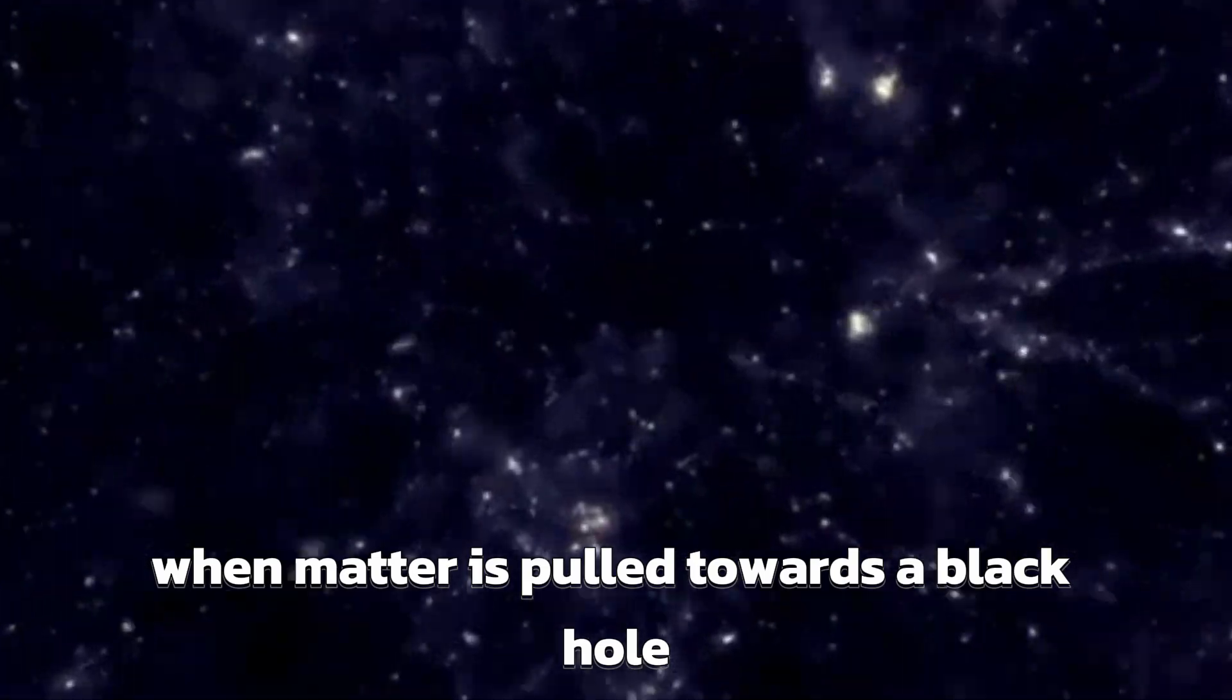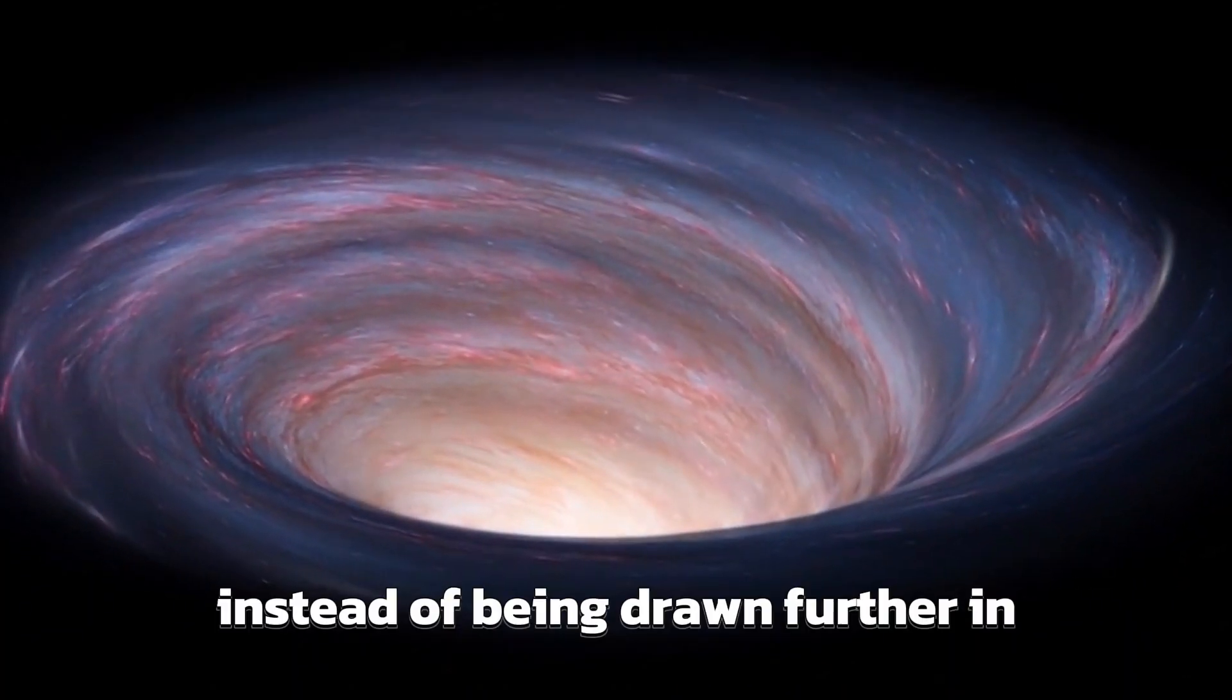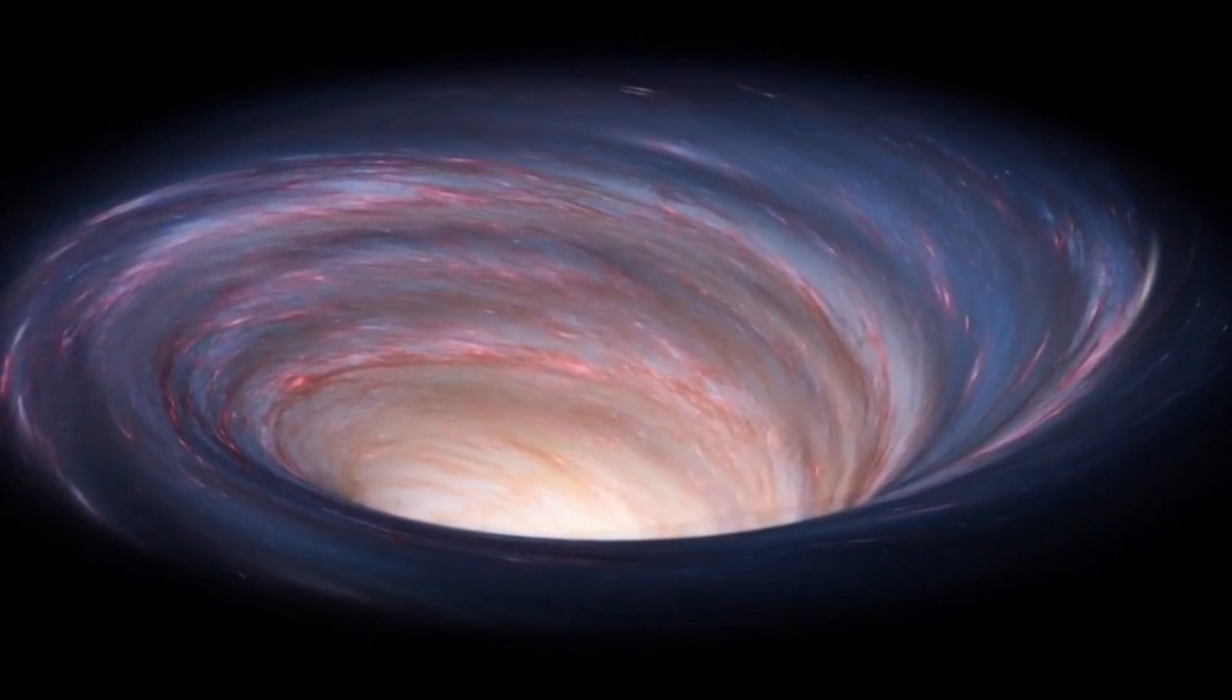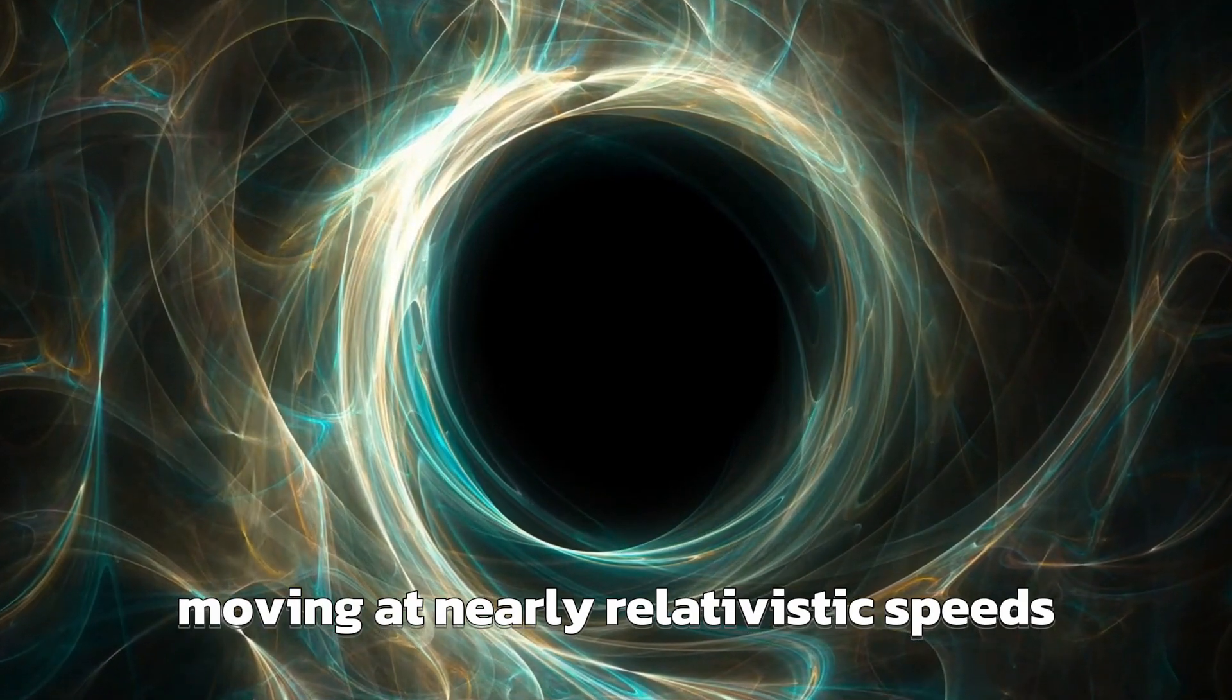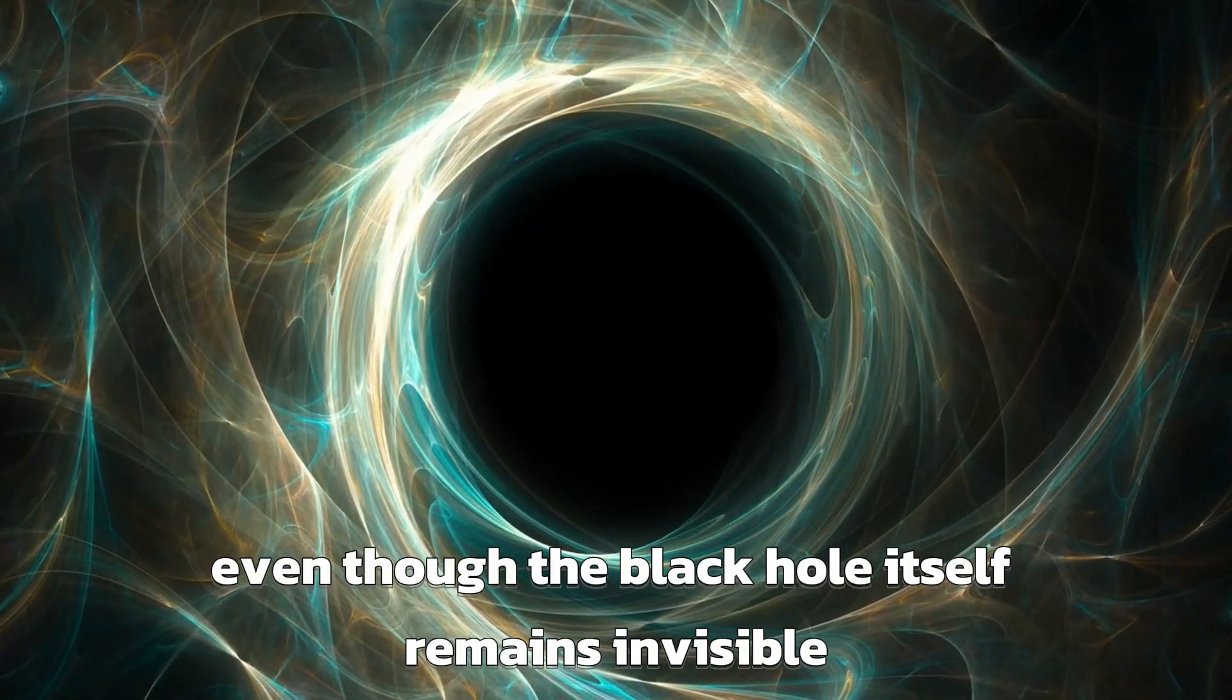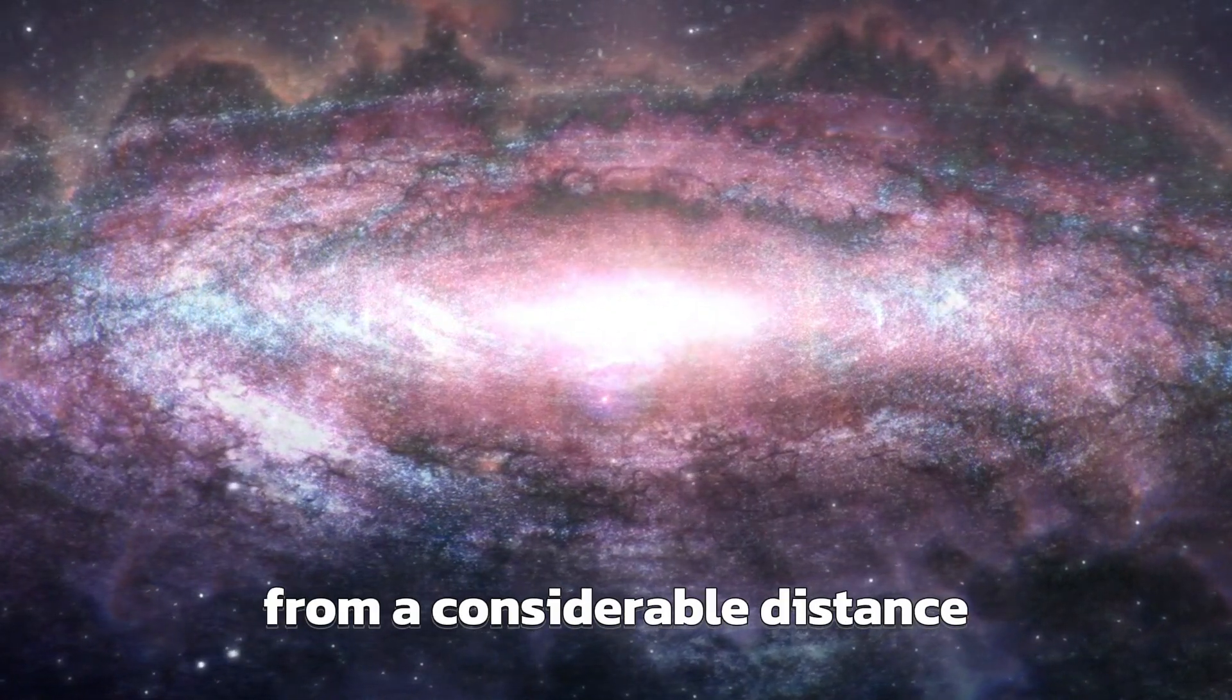When matter is pulled towards a black hole, it can rebound off the event horizon and be pushed out instead of being drawn further in. This results in the creation of bright streams of material moving at nearly relativistic speeds. Even though the black hole itself remains invisible, these intense jets can be observed from a considerable distance.